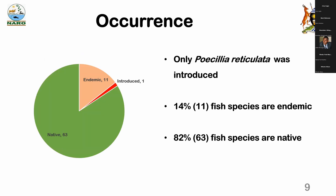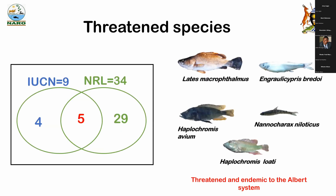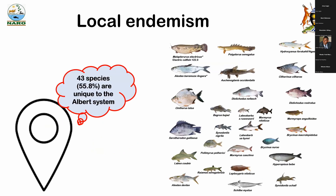63 fish species are native, meaning these 63 fish species of the 77 can be found elsewhere in the world according to the global red list. We also have 43 fish species that are unique — these can only be found in the Albert basin system here in Uganda, which is approximately 55.8 percent.